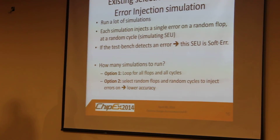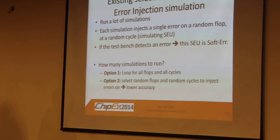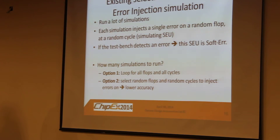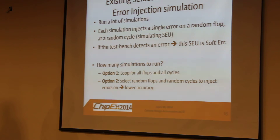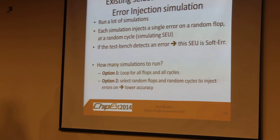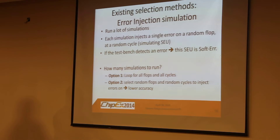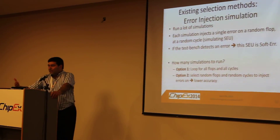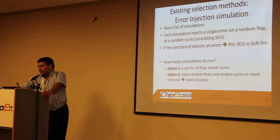So how do we make that selection? One method is error injection simulation. You take your regression or functional verification and run many, many simulations. In each simulation, you inject one error at a random flop and a random cycle, then observe whether that simulation caused an error — assuming functional verification is already clean and now checking for soft error effects.